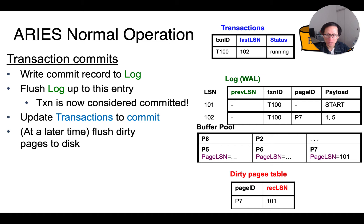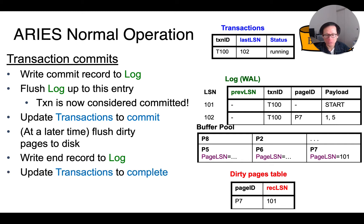Next comes the new part that makes ARIES different from undo logging that we talked about earlier. When all dirty data pages have been written to the disk, we write an end record to the log. And we update the transactions table to say that it is now complete. We will see why we do this in a few slides.